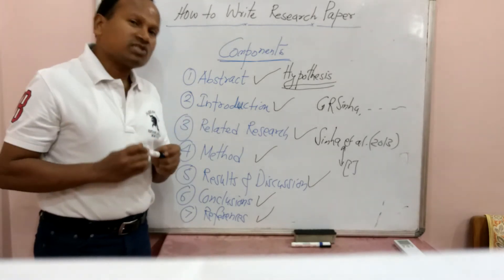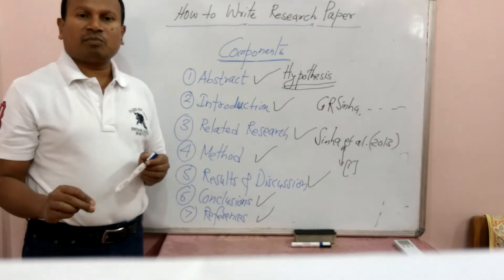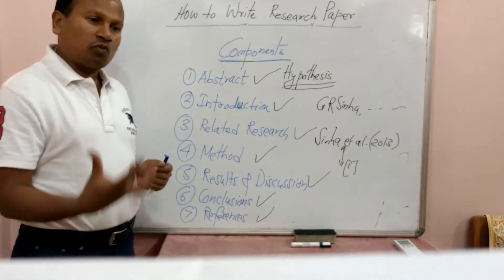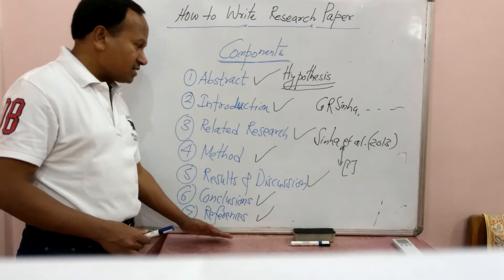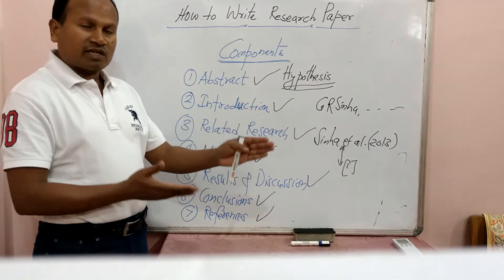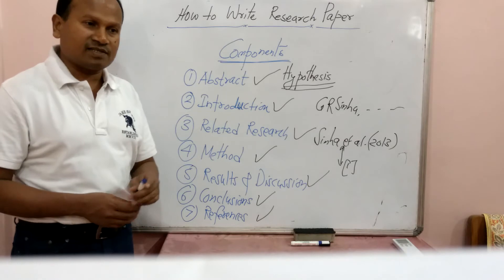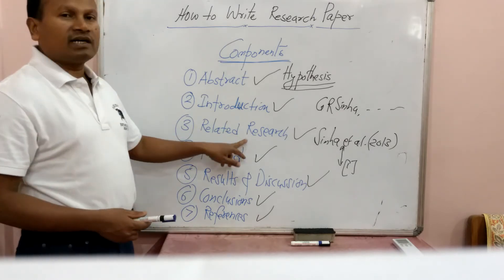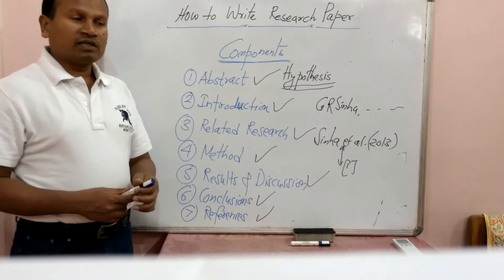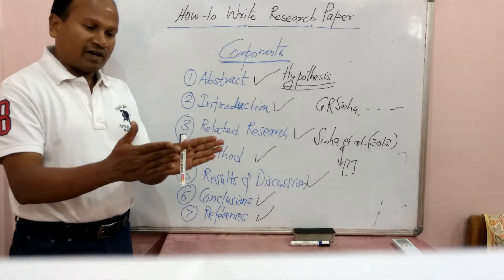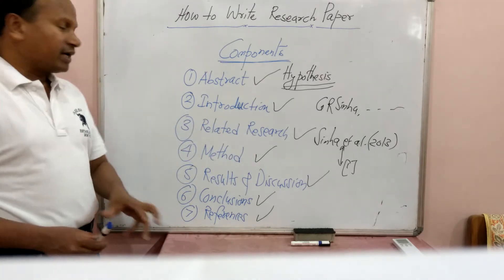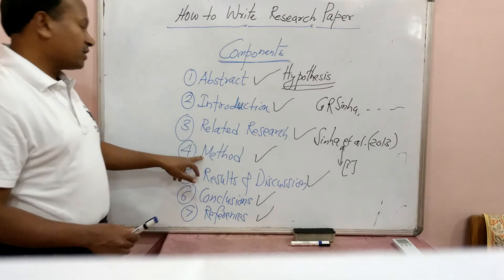Related research is the most important component of any research paper. Why? Because it presents you the mirror — what others have done, how many research papers you have studied, what other researchers have found, what are their findings, what are their limitations, what are their advantages and disadvantages. This is what we normally include in the related research, which we call as literature survey or literature review. This gives you the scope of your work — these are the findings which have been achieved by present researchers and there is a scope of improvement in these parameters.